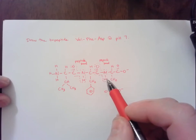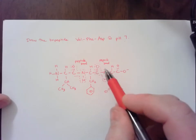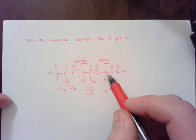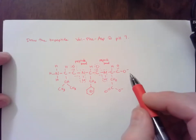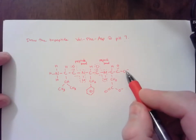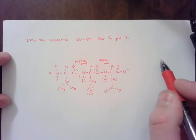Because remember whenever two amino acids come together, water is released. And the OH from that water comes from the carboxylic acid that was there. So for example, if I was to add another amino acid here, this O would go away and become water.